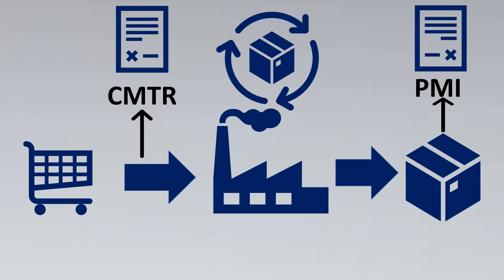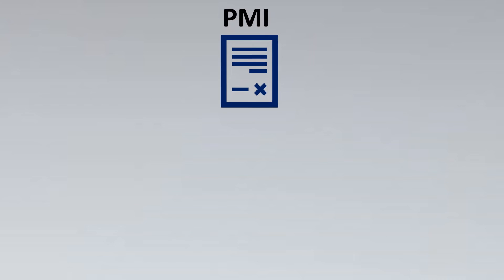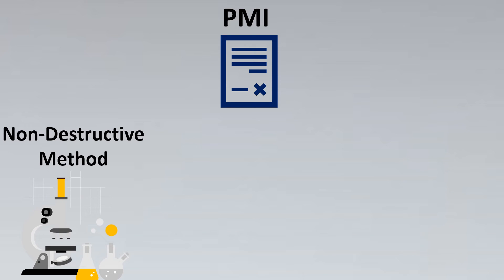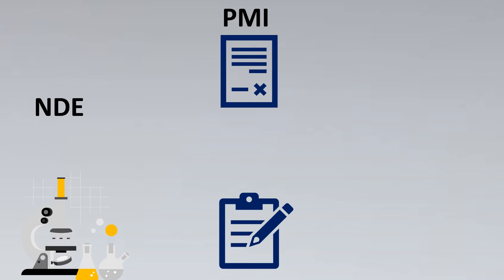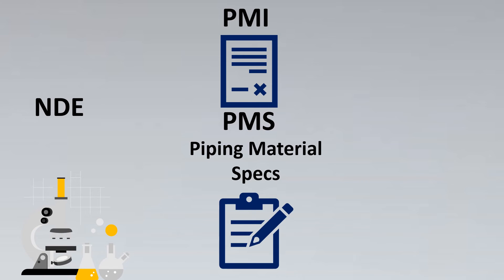Now let's look into PMI — what it actually means and when to use it. PMI, in short and simple terms, is a non-destructive method of testing a particular material composition, called NDE for short. One basis for when to use PMI is the piping material spec (PMS) of a particular pipe. If a pipe material specification requires PMI, then obviously the instrument department also has to take PMI into consideration, because if piping is taking it, the instrument also needs to go through PMI.